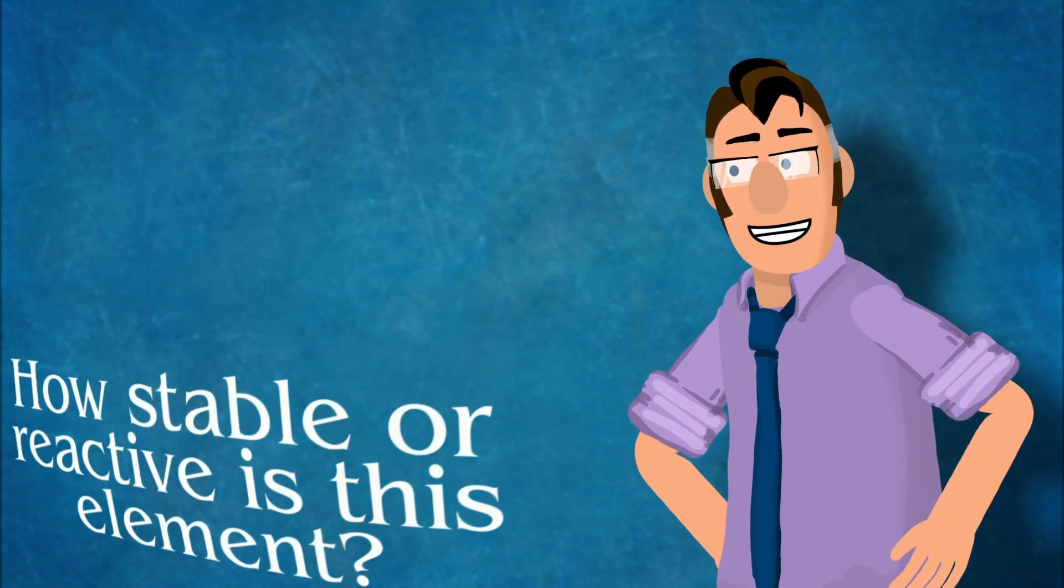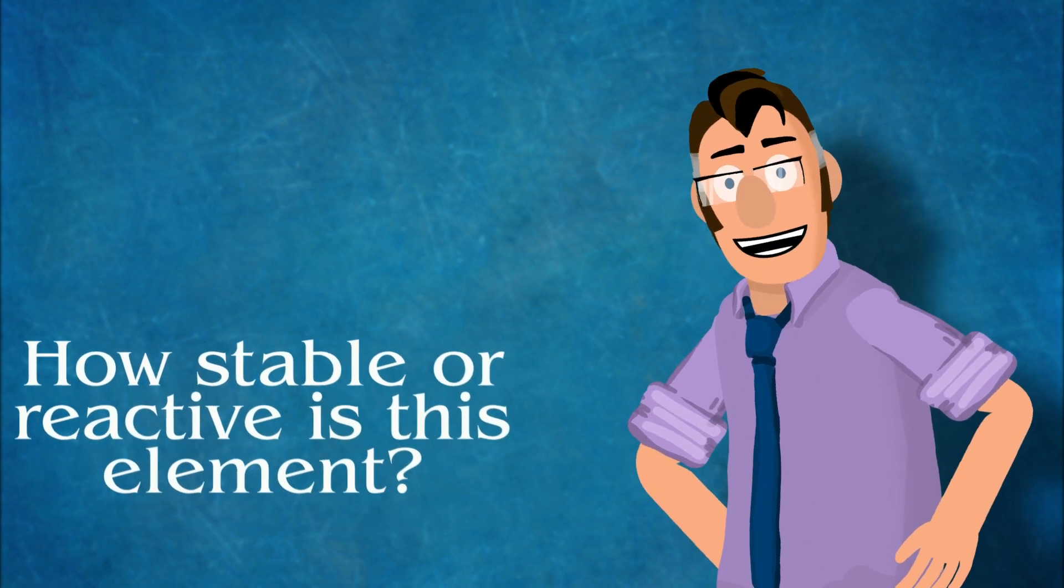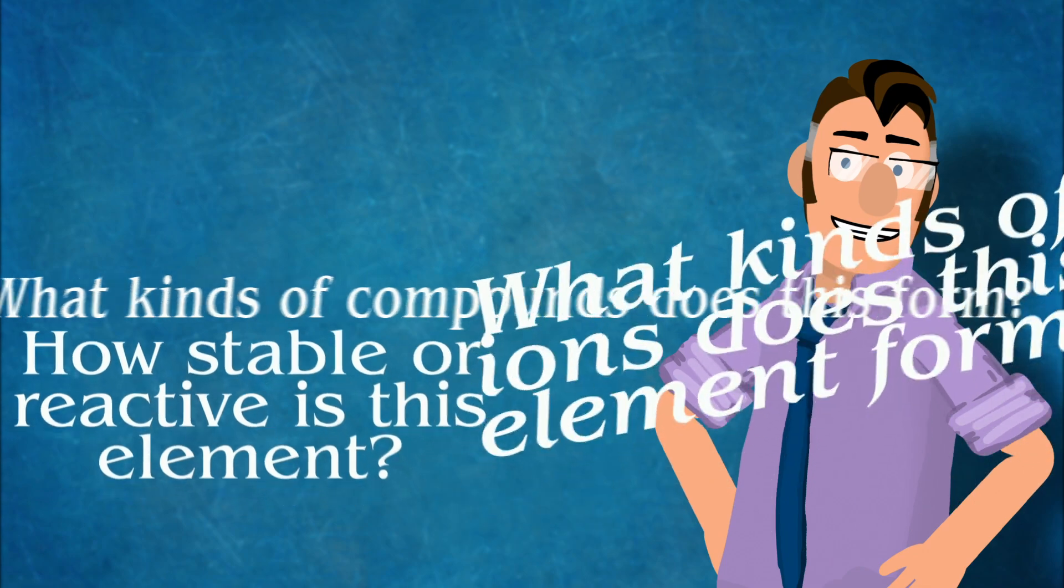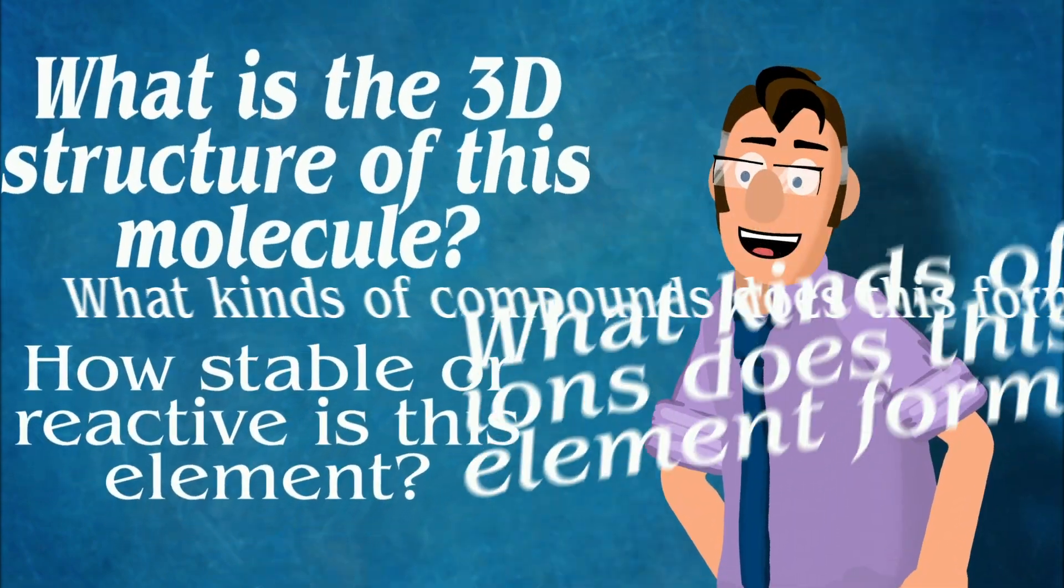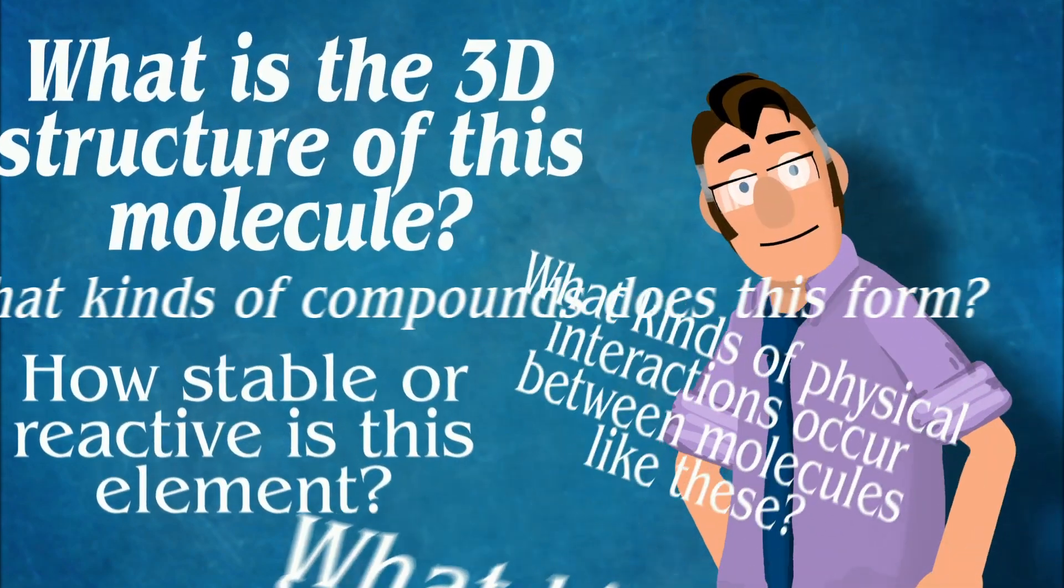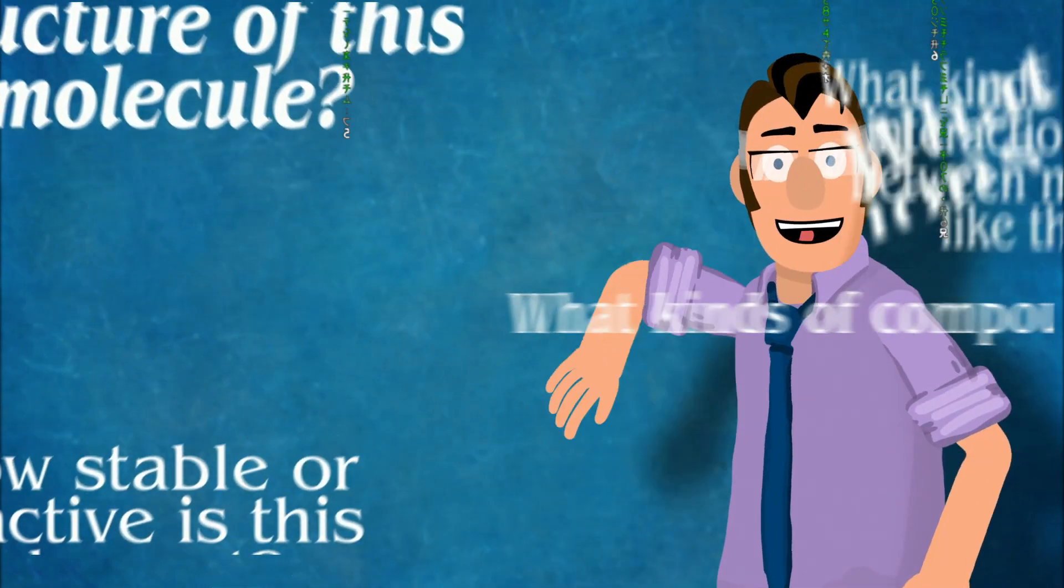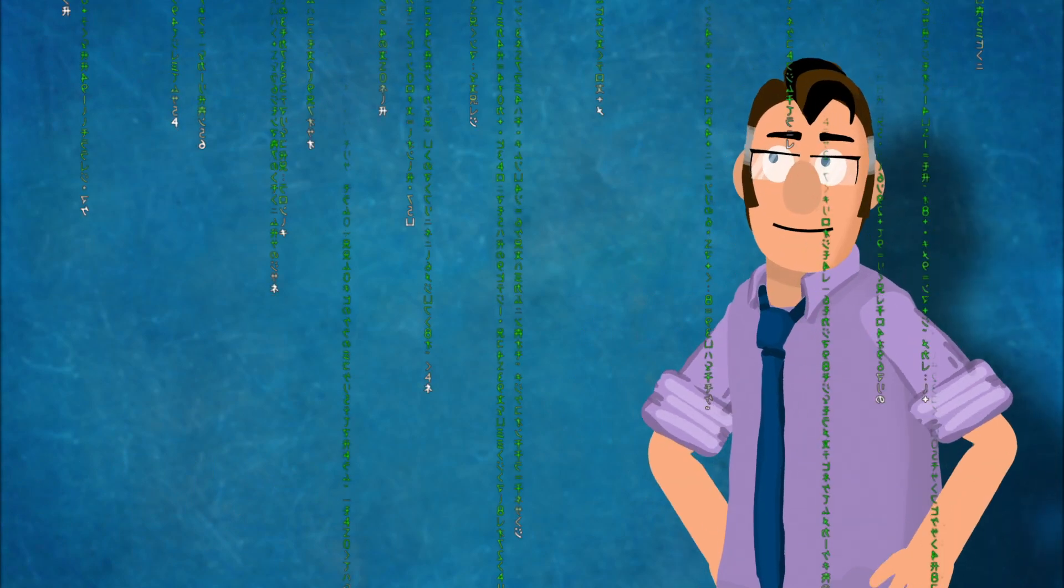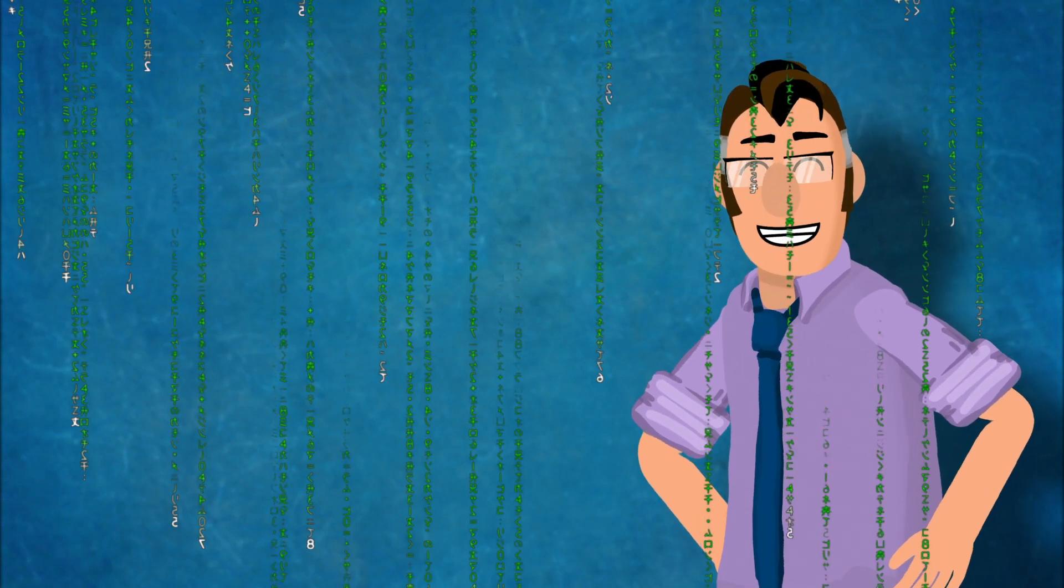They determine how stable or reactive elements are. They determine what kind of ions atoms will form and what kind of compounds they can make. They determine the 3D shapes of molecules and how those molecules will physically interact with each other. In fact, I can make a very strong argument that every single compound in the universe owes its existence to a couple of atoms trying to get a stable number of electrons.